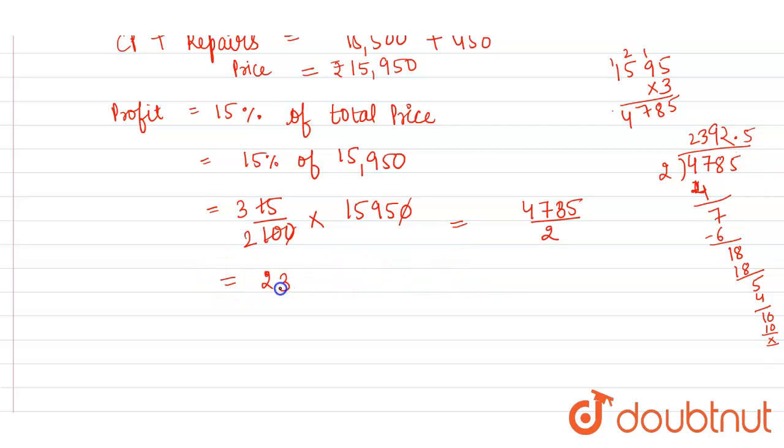Now we have to find the selling price of the article. So selling price equals cost price plus profit. Cost price is Rs. 15,950 plus profit is 2,392.5.